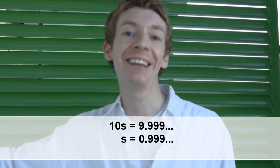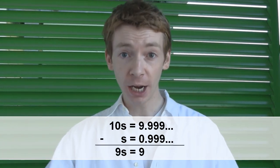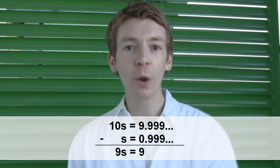10s equals 9.999 recurring. Take the difference, and you'll get 9s equals 9, and obviously then s equals 1. So you've got s equals 0.999 recurring, and s equals 1.